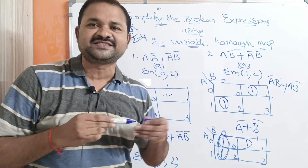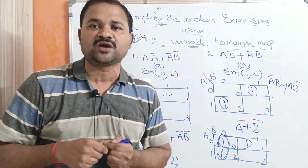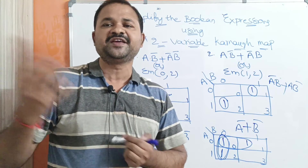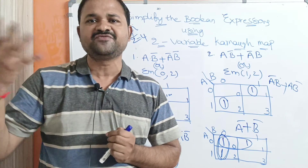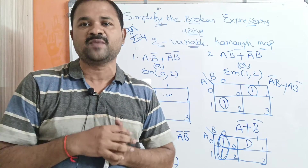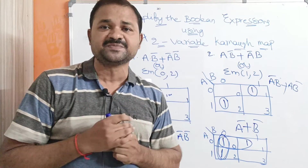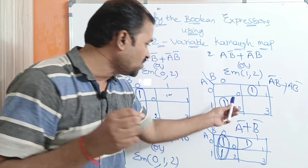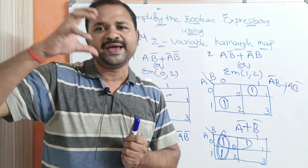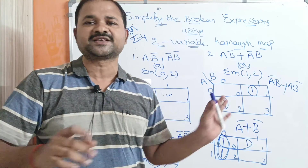Likewise, we can simplify any Boolean expression with the help of a two-variable Karnaugh map very easily. In the next video, we will see the three-variable Karnaugh map, and after that we will discuss four-variable and five-variable Karnaugh maps as well. The procedure is straightforward: based on the minterms, write 1 in the corresponding Karnaugh map cells, group adjacent cells into pairs, and write the corresponding simplified expression.